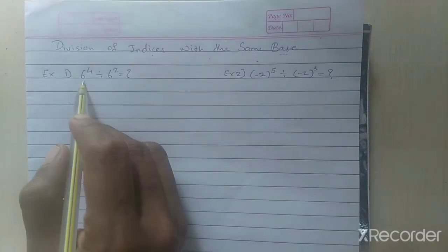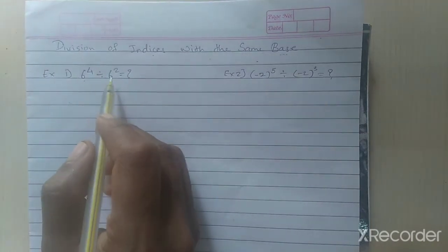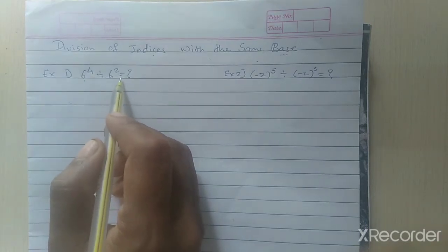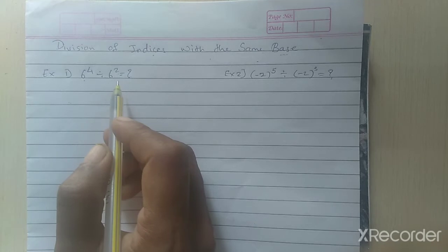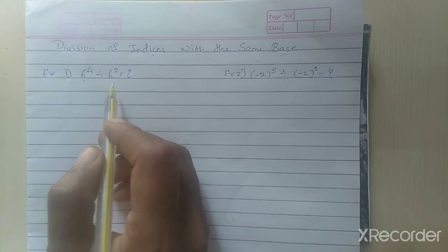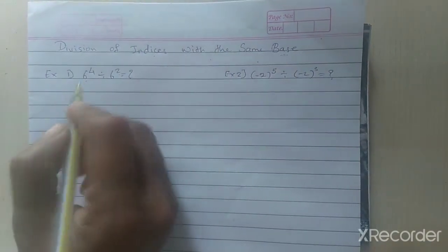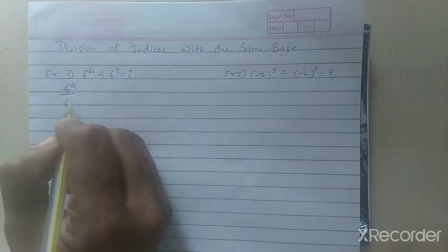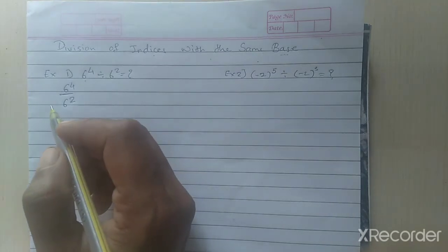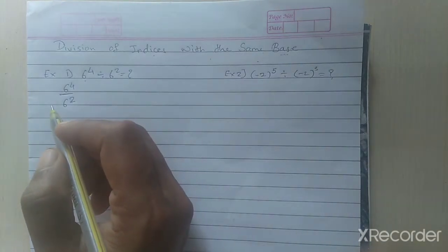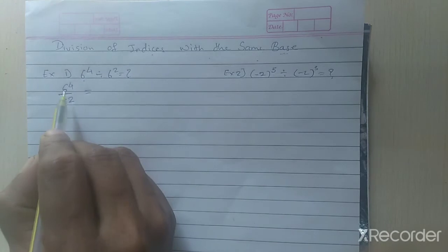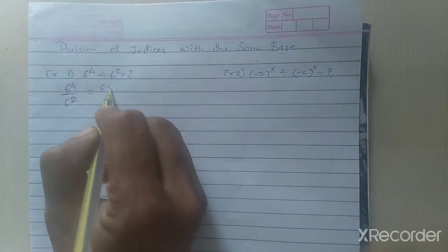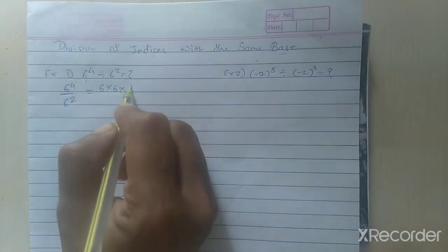Example number 1: 6 raised to 4 divided by 6 raised to 2 equals what? We have to find the value. First, we have to arrange it. We write 6 raised to 4 divided by 6 raised to 2. How many times does 6 appear in the numerator? 4 times. So we write 6 in multiplication form 4 times.